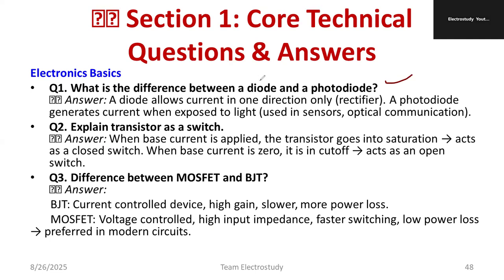Diodes can be divided into signal diodes and power diodes. For small, low-power applications, we choose diodes like 1N4001. For high-power applications, we use power electronics devices like MURCDs or similar. So that is the difference between a diode and a photodiode.